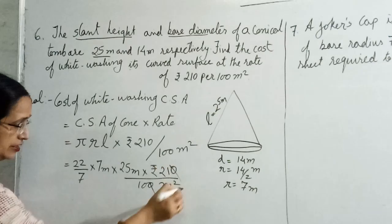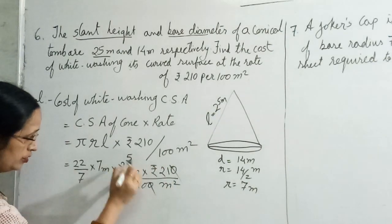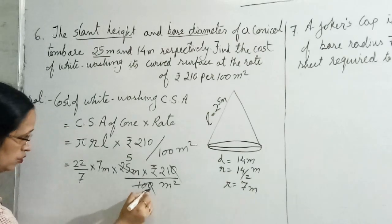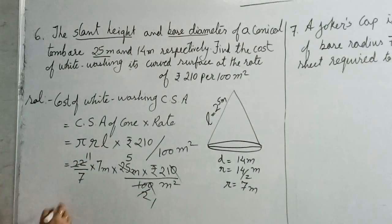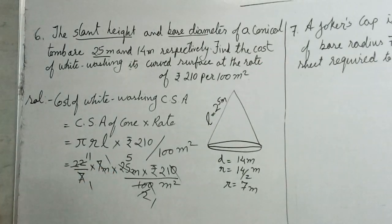Now easily, 0 and 0 are cancelled, and 5's are, 2's are, 1's and 11's are, 7's are. So if you have to multiply 11 into 5 into 21.